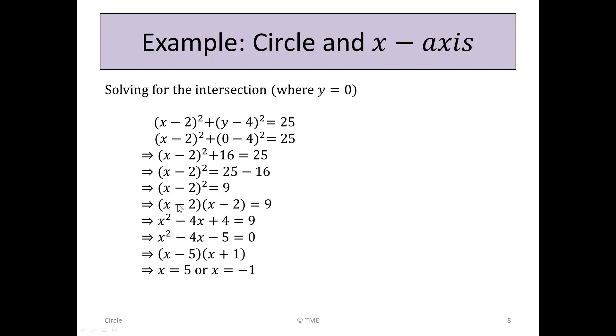We can expand now. (x - 2)² is (x - 2)(x - 2) = 9. Multiplying across, we have x² - 2x - 2x + 4 = 9, which gives us x² - 4x + 4 = 9. If we take the 9 across now, we get x² - 4x - 5 = 0.